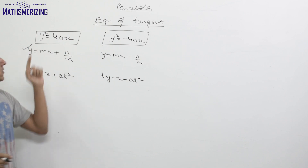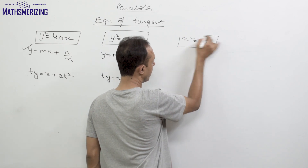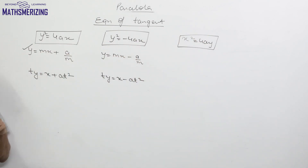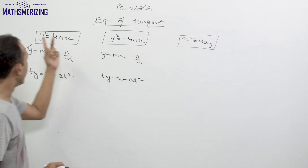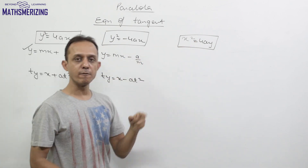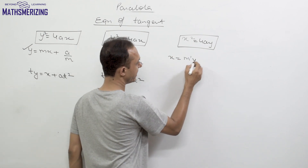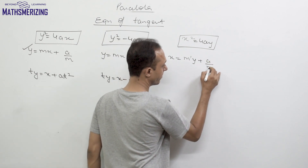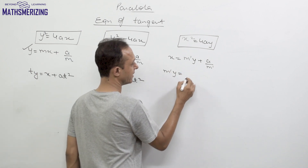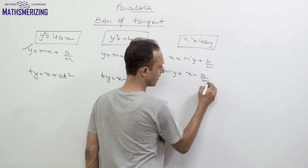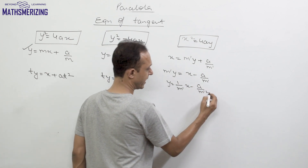For the third form x² = 4ay, we need to write the equation of tangent in terms of its slope. The difference between the first and third equations is that if we interchange x and y we get the first equation. So for this third form we can write: x = m'y + a/m', which rearranges to y = (1/m')x - a/m'².